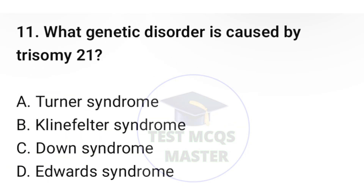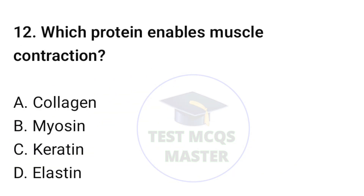Question number eleven: what genetic disorder is caused by trisomy 21? The correct option is C, Down syndrome. Question number twelve: which protein enables muscle contraction? The correct option is B, myosin.